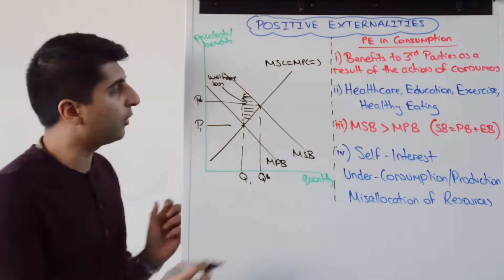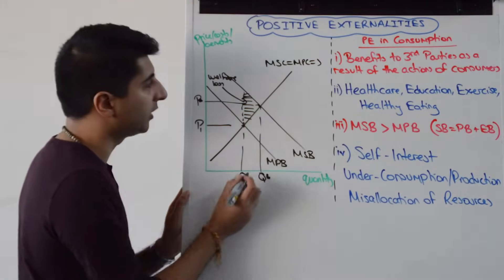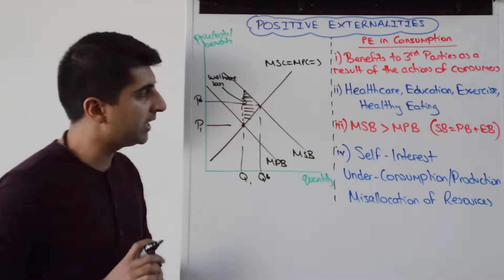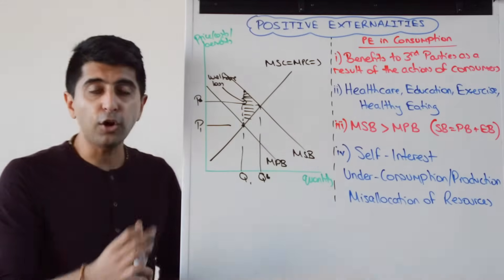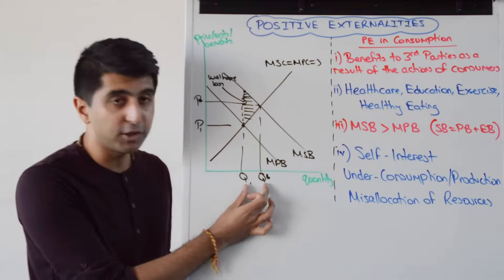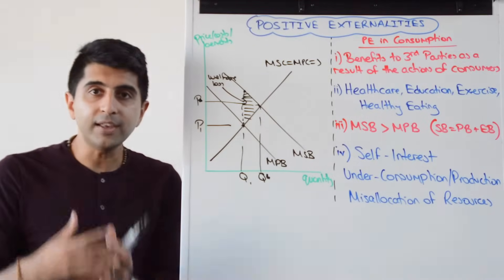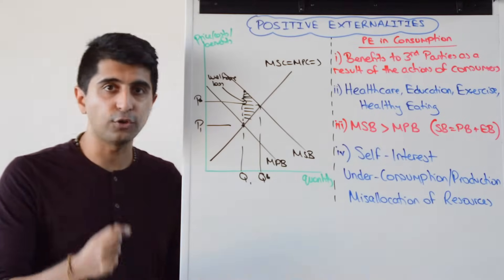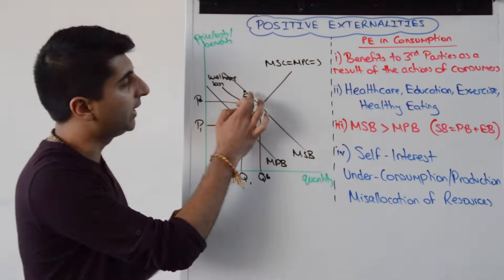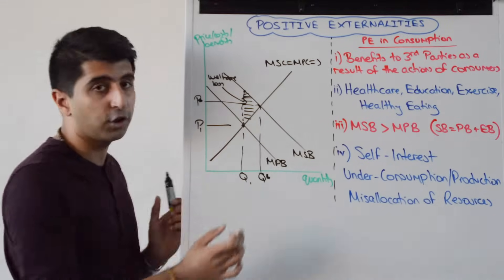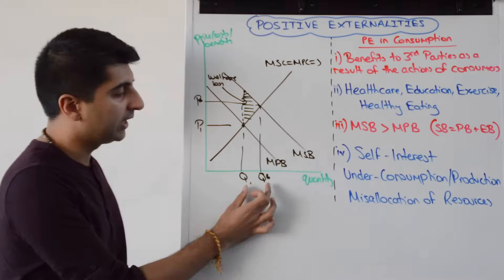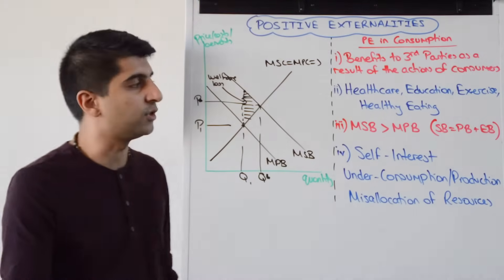Why is it a welfare loss? Well, you can clearly see that at Q1 social benefit is there and social cost is way down here — more benefit than cost. And that means that by not producing these extra units from Q1 to Q*, we as society are losing out on potential extra social benefit. Because all of these units beyond Q1 up to Q*, the social benefit is higher than the social cost. By not producing those, we are losing out on net social benefit that would have been derived if those units were produced.